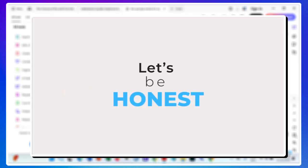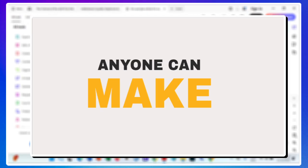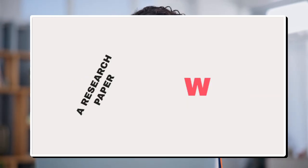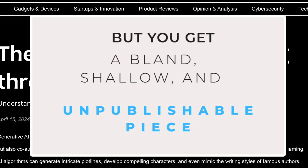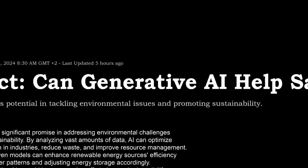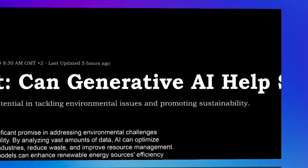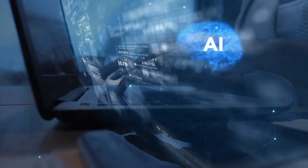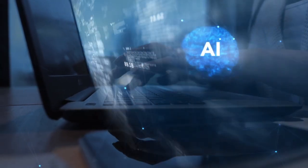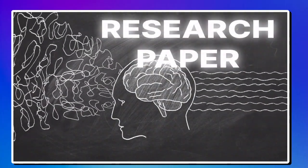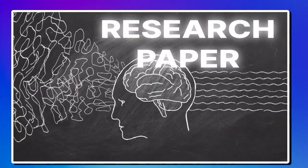Let's be honest. Anyone can tell an AI to write me a research paper, but what do you get? A bland, shallow, and unpublishable piece that no serious professor or journal will take seriously. The truth is, AI can only be as good as the person prompting it. If you don't understand what each section of a research paper really requires, from the abstract to the conclusion, the AI won't either.